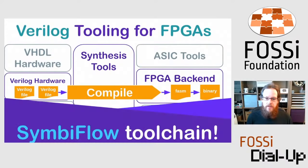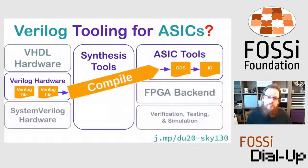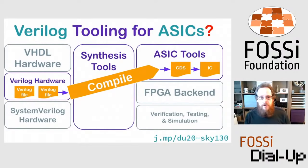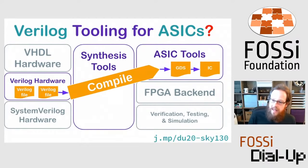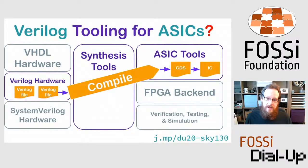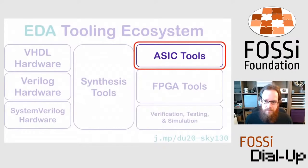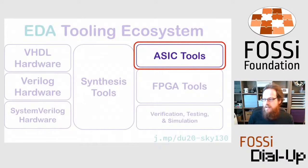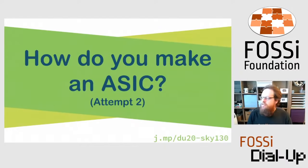With open source tooling — the SymbiFlow toolchain — you can take Verilog files, compile them with a synthesis tool, do place and route in the FPGA, and get a binary to load into an FPGA. When Tim got into ASICs, he thought it would be exactly the same: take Verilog, run through synthesis, through some ASIC tooling, out pops GDS to send for manufacturing. It turns out, however, that the ASIC toolbox is actually surprisingly and significantly more complicated than FPGA tools.